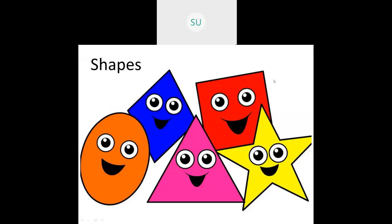Shapes are plain closed figures which you observe every day in different objects. We have so many different shapes — a triangle, a square, a rectangle, an oval shape, stars, kite. These are all different shapes.